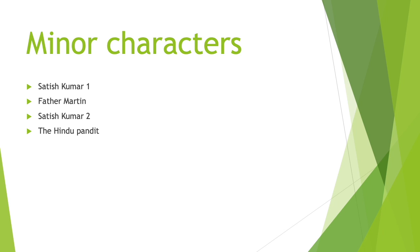Satish Kumar is Pi's biology teacher. A polio survivor, he is an odd-looking man with a geometric-shaped body. An atheist and a communist, he is logical and scientific, with faith in the views of Mendel, the father of genetics, and Darwin's natural selection. Pi is able to accept Mr. Kumar's atheism because, although Kumar does not believe in God, he still believes and takes the leap of faith that reason leads him to.